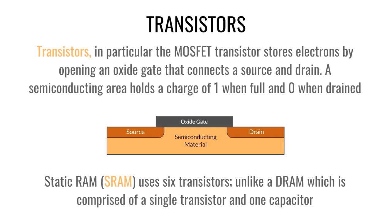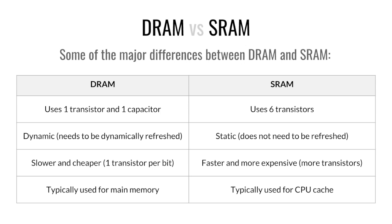DRAM uses one capacitor and one transistor, where the transistor is used as a gate. Here are some key differences: DRAM uses one transistor and one capacitor; SRAM uses six transistors. DRAM is dynamic and needs to be refreshed; SRAM does not. DRAM is slower and cheaper — if you have to keep telling somebody to do something it's less effective. SRAM is faster and more expensive because of the transistors.